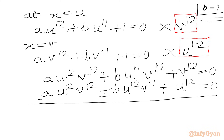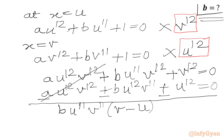We subtract the second equation from the first so the 'a' terms cancel. Taking b common from the second term, with u¹¹·v¹¹ factored out, we get b·u¹¹·v¹¹·(v − u) in the bracket. Then we write: b·u¹¹·v¹¹·(v − u) + v¹² − u¹² = 0.